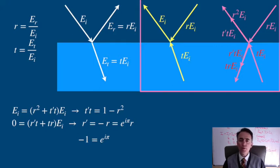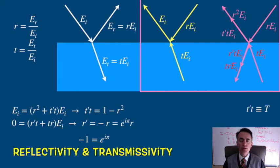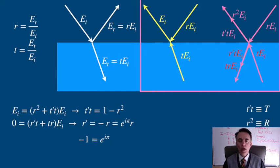I will define reflectivity and transmissivity, capital R and capital T, as the reflection coefficient squared and as the product of the transmission coefficient from medium 1 into medium 2 and from medium 2 into medium 1, T times T prime.